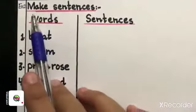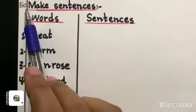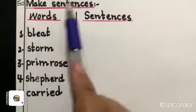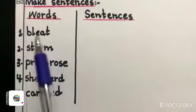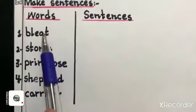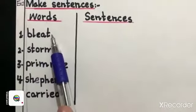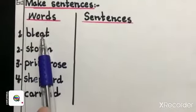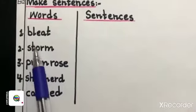After doing your words meaning you have to mention exercise number three. Make sentences. Put hyphens and underline your question. Word sentences. Your first word is BLEAT. BLEAT means sound made by sheep or lamb. You have to make sentence of BLEAT.